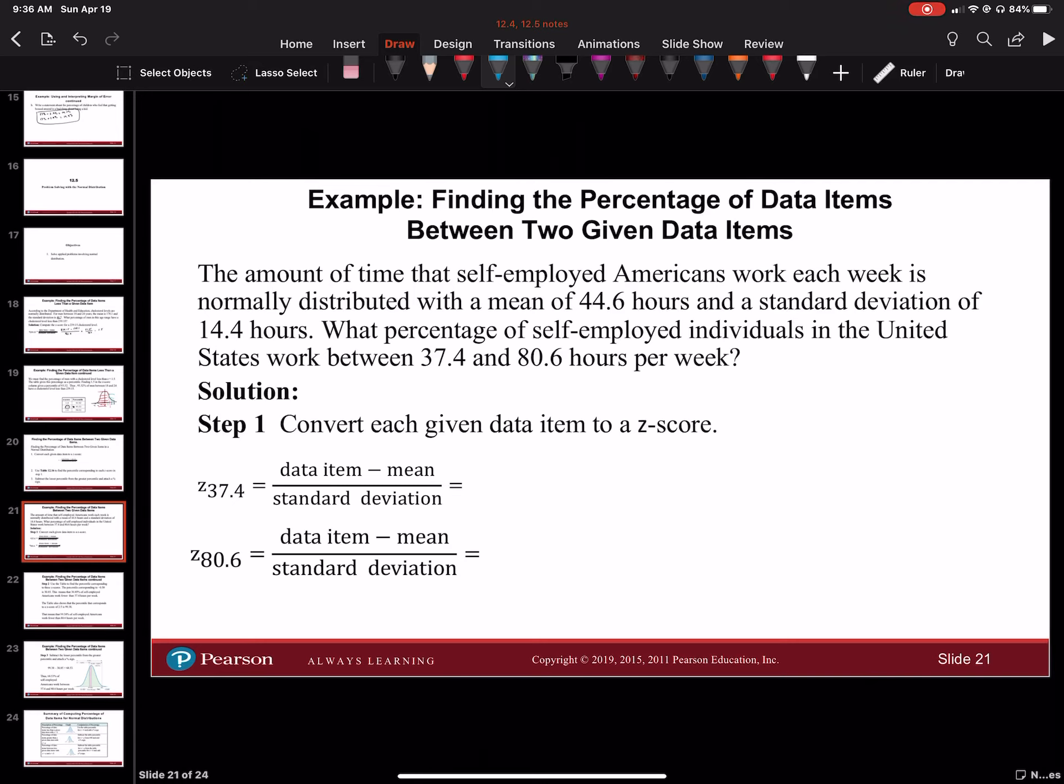First we'll use 37.4. We're going to do 37.4 minus 44.6 all over 14.4 hours. When we put that in our calculators, we're going to get negative 0.5.